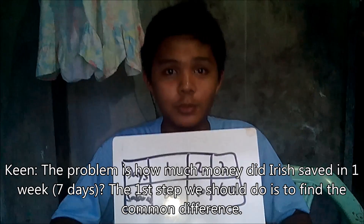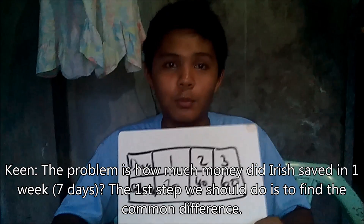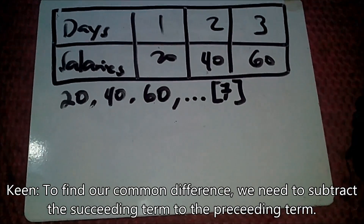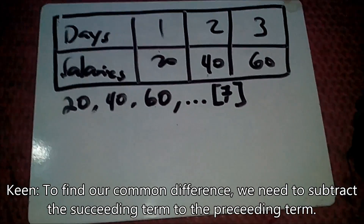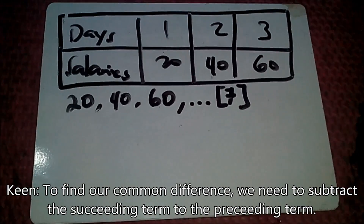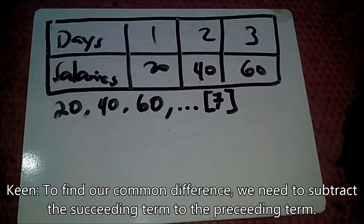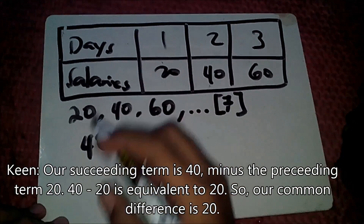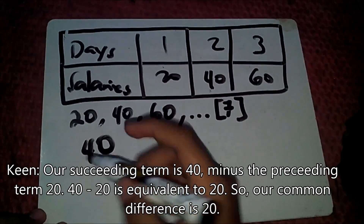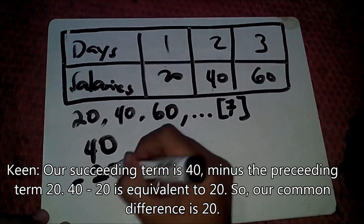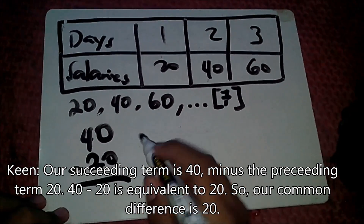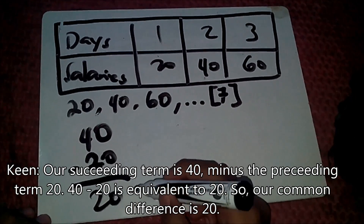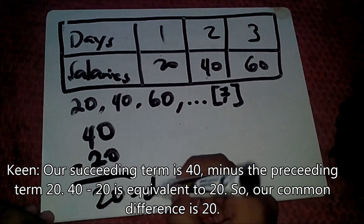The first step we should do is find the common difference. To find our common difference, we need to subtract the preceding term from the succeeding term. Our succeeding term is 40 minus our preceding term, 20. So 40 minus 20 is equal to 20. Our common difference is 20.